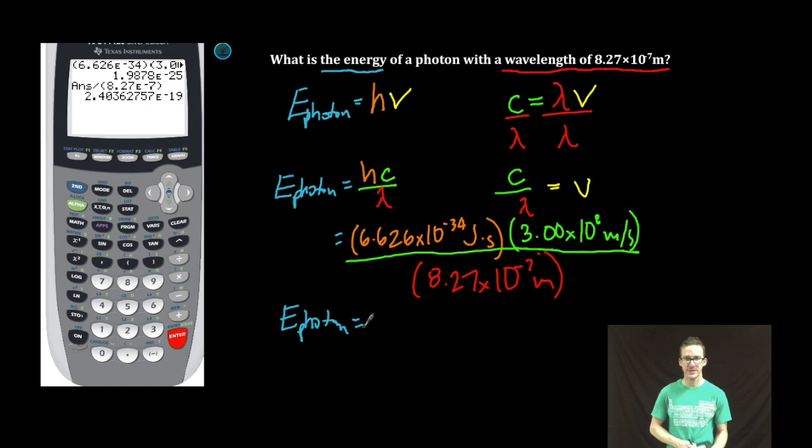Energy of our photon is equal to 2.40 times 10 to the negative 19 joules. Boom.